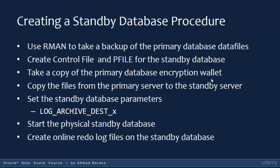After preparing the primary database and standby system, you proceed to create the standby database. The manual procedure involves: using RMAN to back up the primary database files, creating control files and a P-file for the standby, copying the primary database encryption wallet if one exists, copying all files from the primary server to the standby server, setting the standby database parameter LOG_ARCHIVE_DESTINATION in the primary database, and then starting the physical standby database.